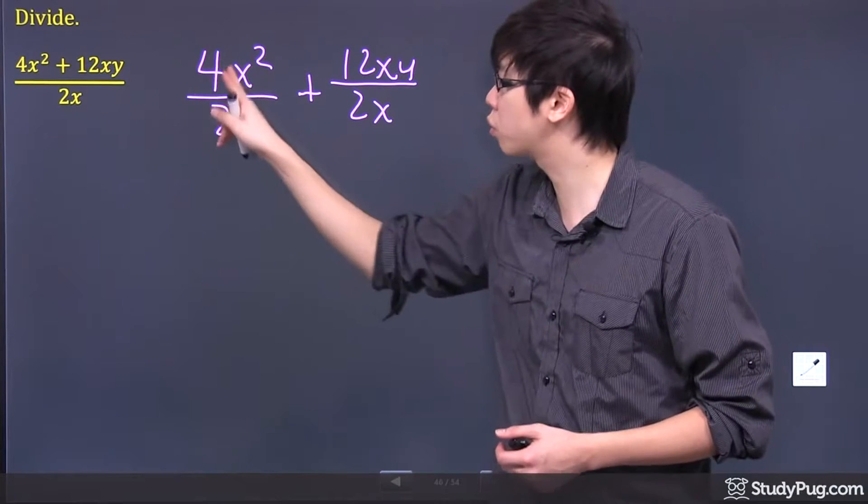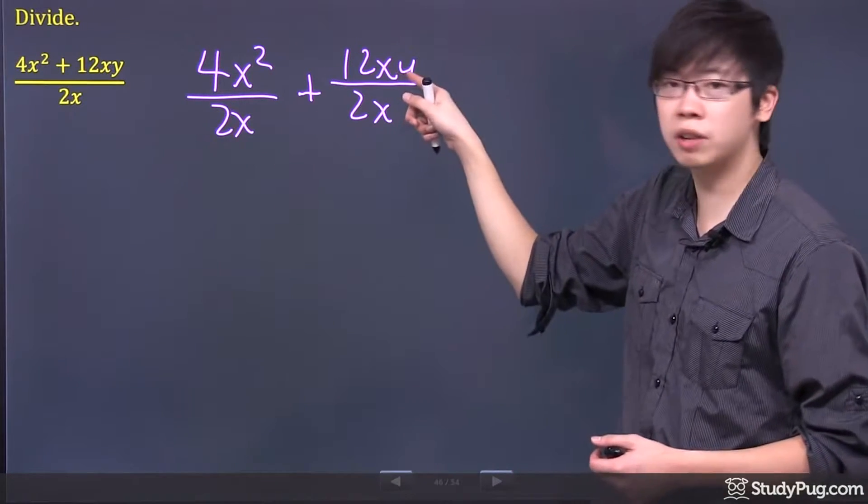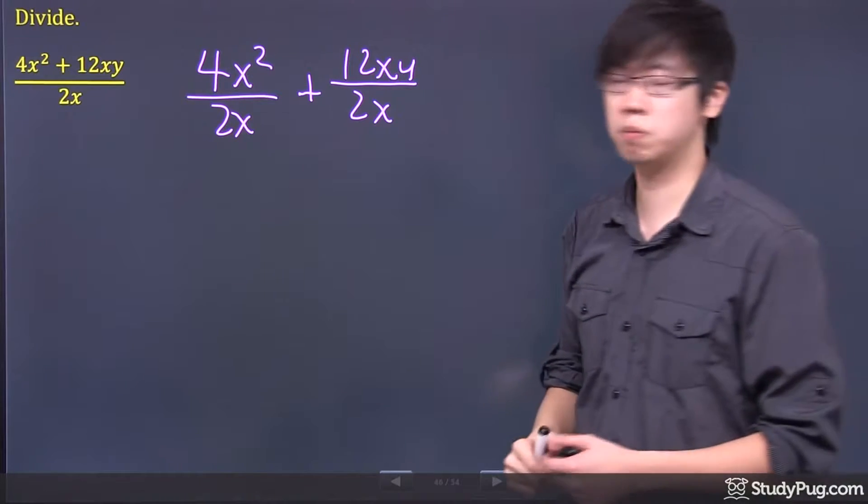So basically we have 4x squared from the front divided by 2x and then we also have the 12xy divided by 2x. You can actually do that.